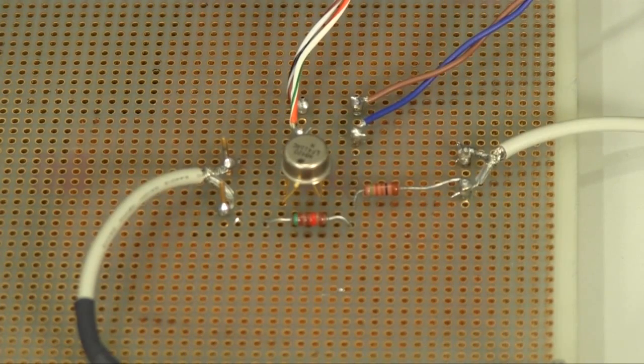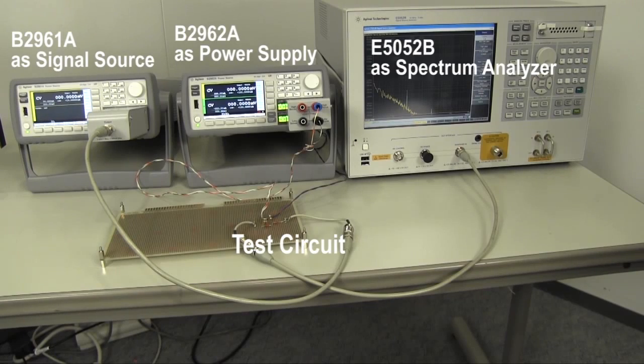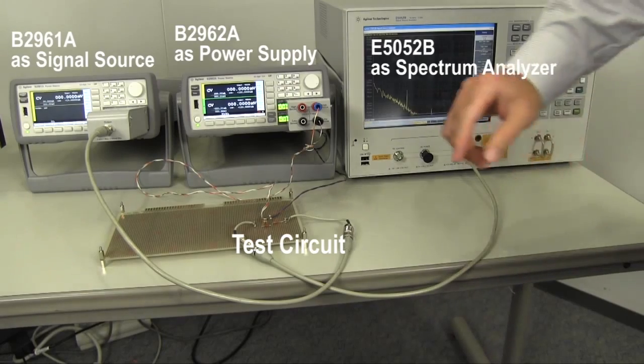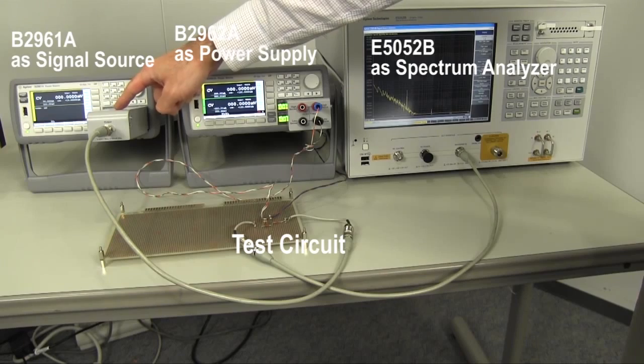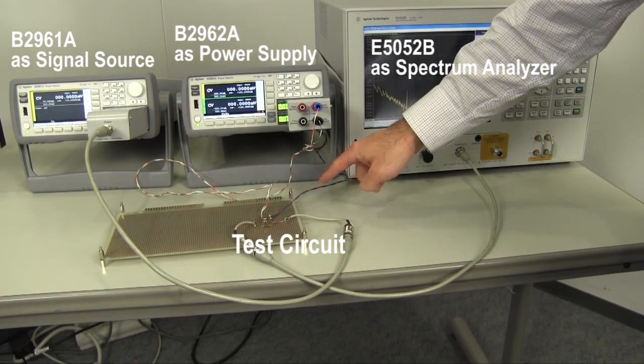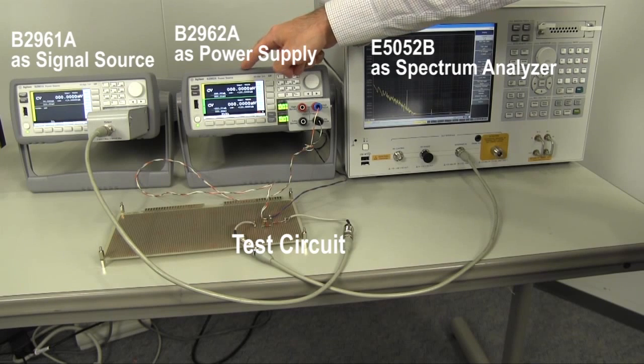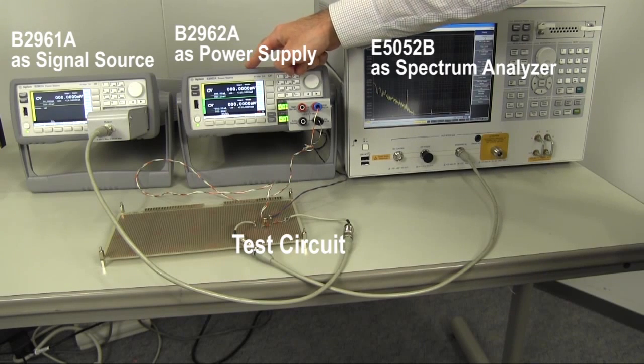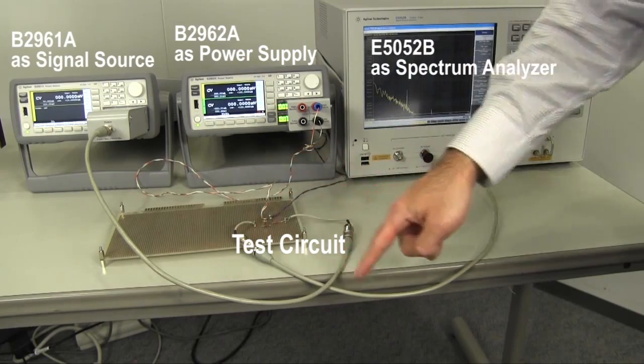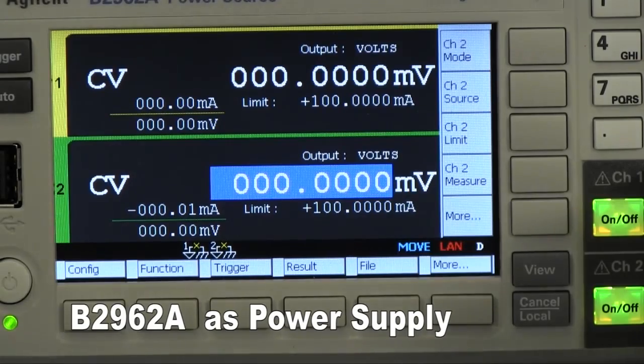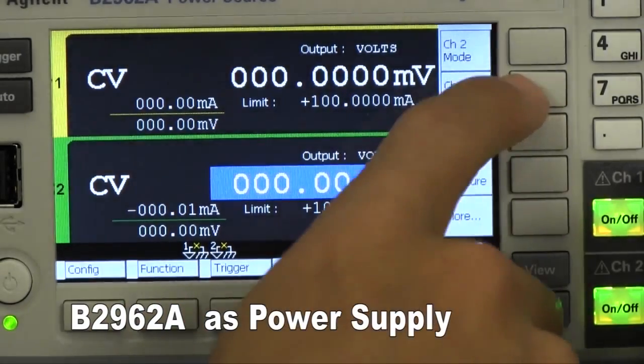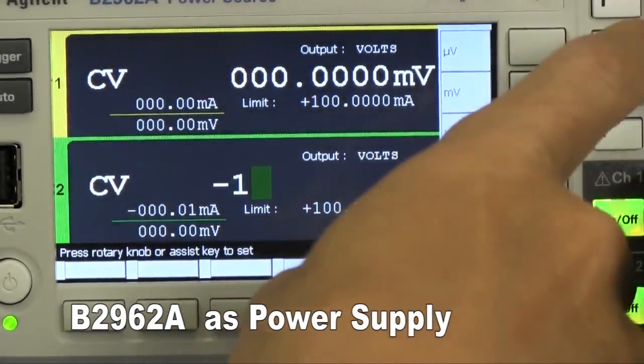This is the inverting amplifier to be tested. Here's the actual setup. You can see the connections. The input is from this B2961A, and these wires come from the B2962A as a power source. The output is connected to the spectrum analyzer. So let's set plus and minus 15 volts to the power supply and start measurement.